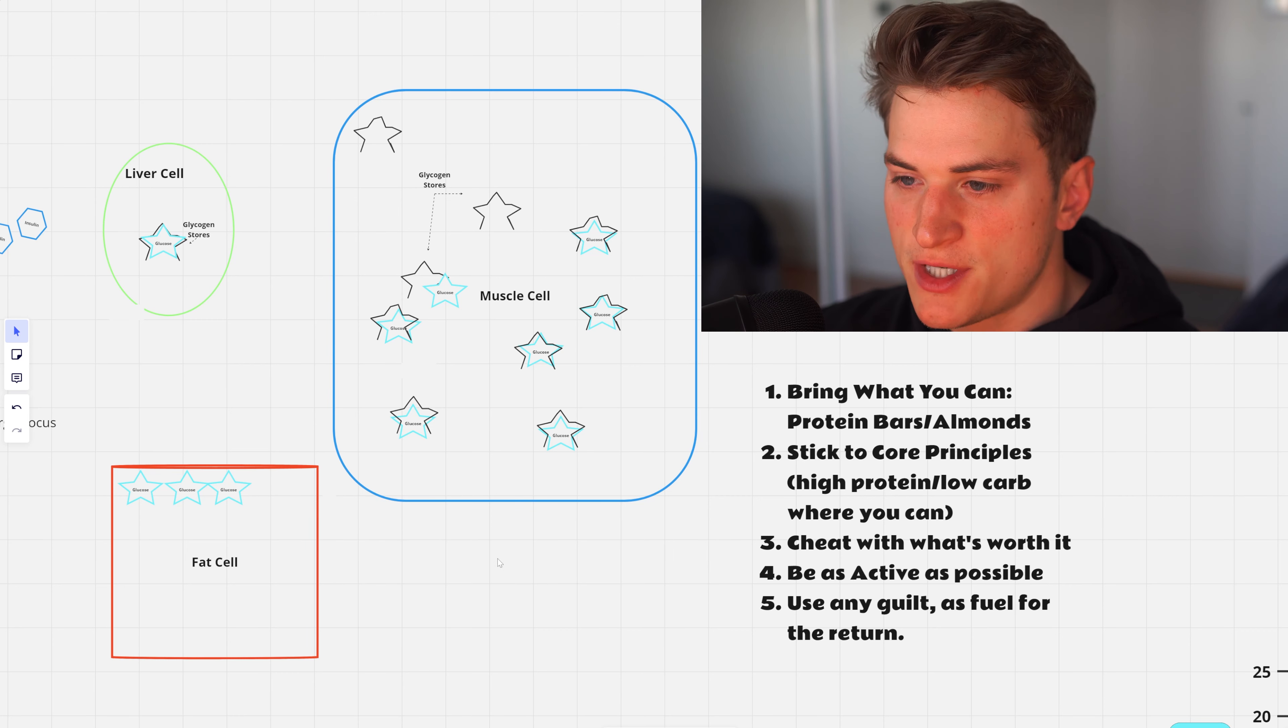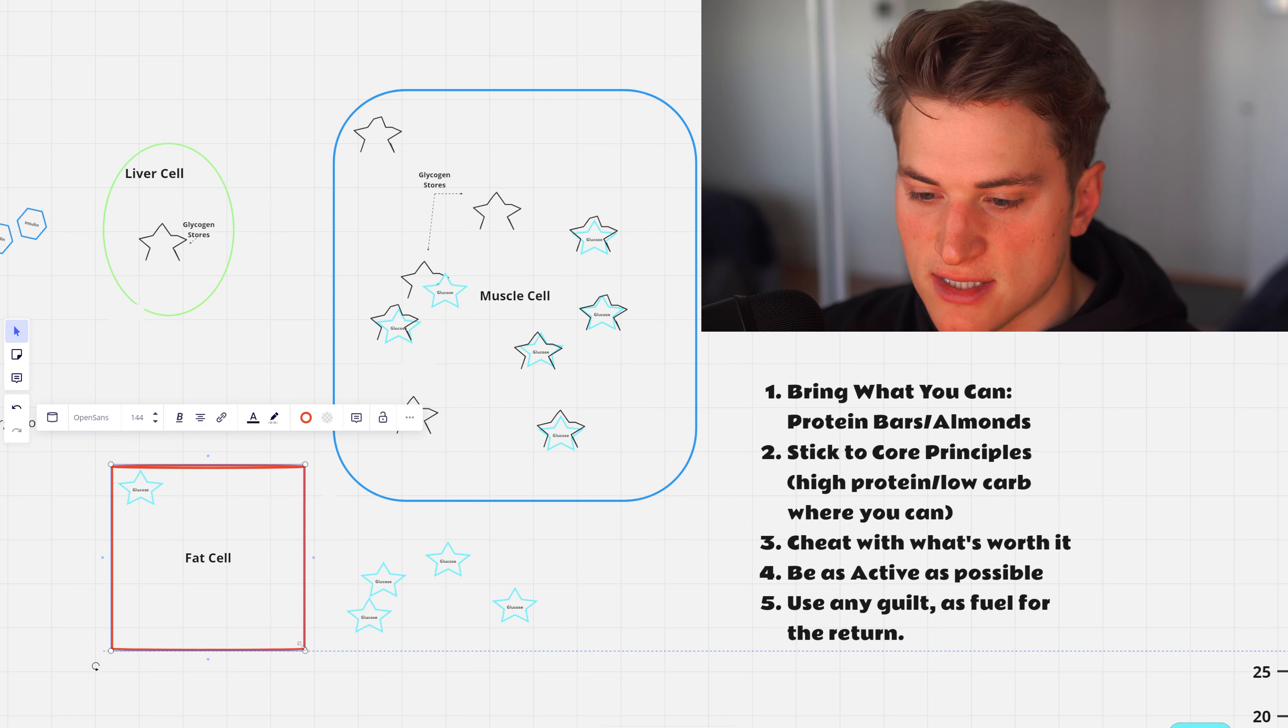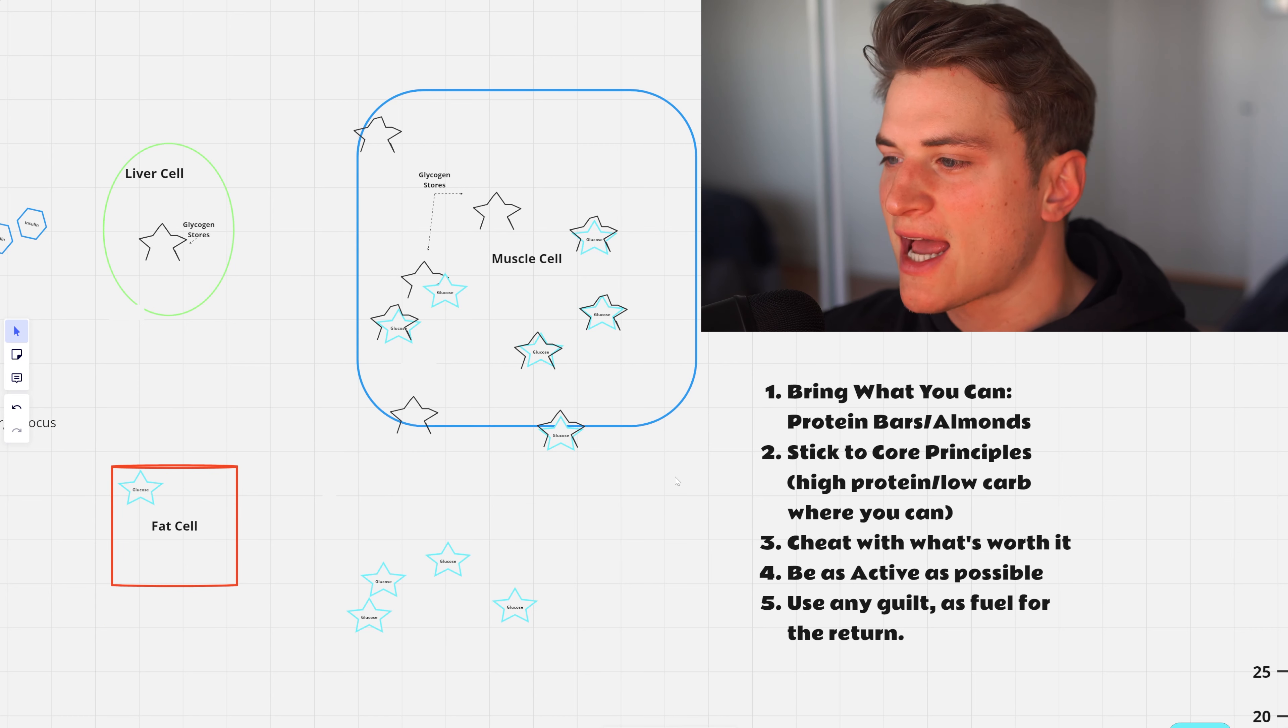When you do return, you've mitigated this damage and we get back into our routine. We start converting the glycogen back with glucose and minimize the fat cell again. So that's it guys. When you travel and go on vacation, you stick to these five principles, you take advantage of your larger muscle and liver cells and minimize the amount of fat you put on.